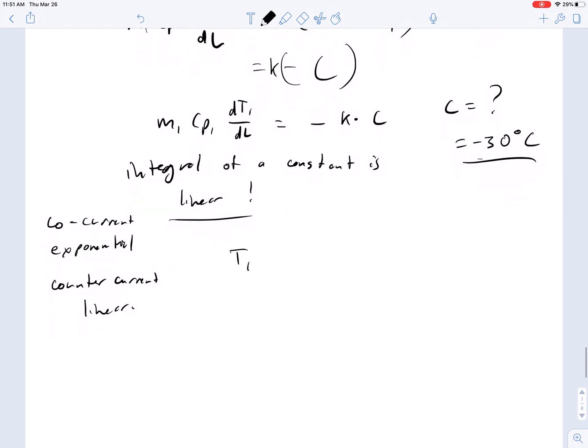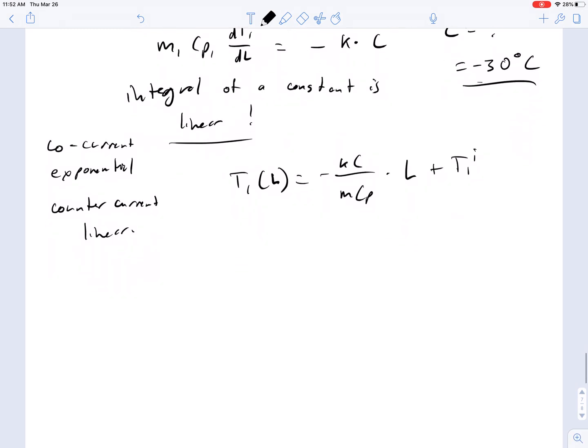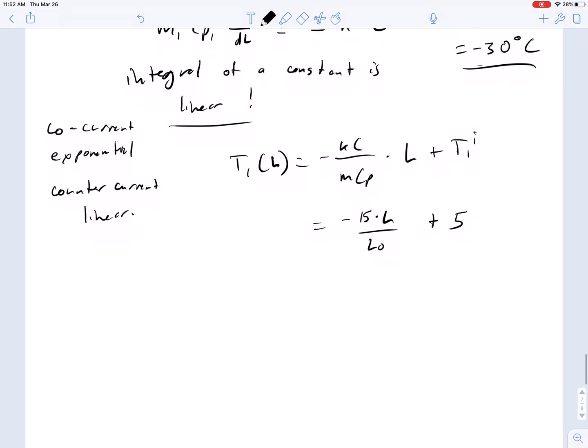So here our equation for temperature 1 as a function of L is equal to minus K times C over M CP times L plus T1 initial. Or, making some substitutions, this is equal to minus 15 times L over L0 plus 5.